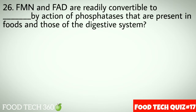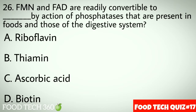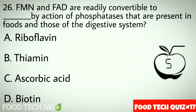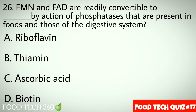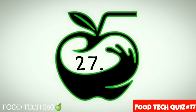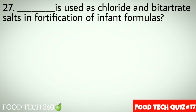Question number 26: FMN and FAD are readily convertible to dash by action of phosphatases that are present in foods and those of the digestive system. Options: A. Riboflavin, B. Thiamine, C. Ascorbic acid, D. Biotin. Correct answer: A. Riboflavin.